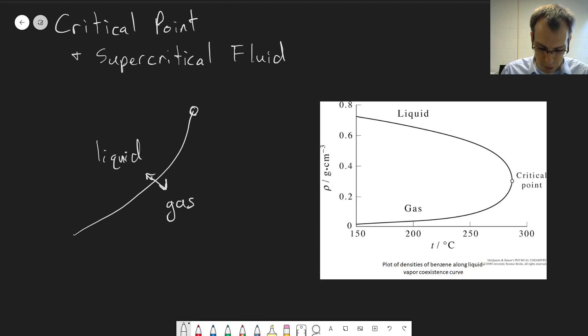At a certain point, we reach a critical point. There's a critical temperature and a critical pressure associated with this critical point. Above that temperature and pressure, if we go anywhere in this region, we reach a point where our liquid and gas are no longer separate phases. Instead, they're a single phase called a supercritical fluid.